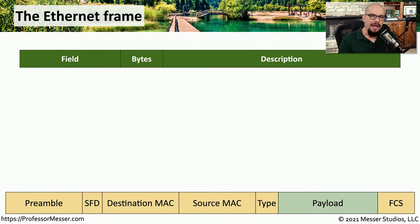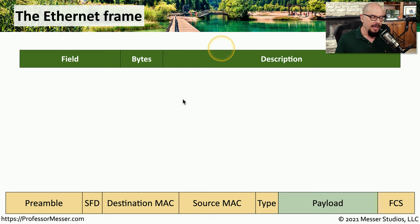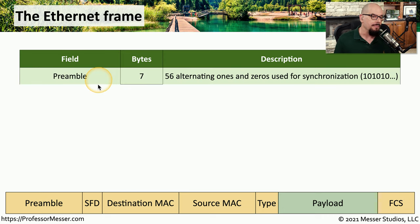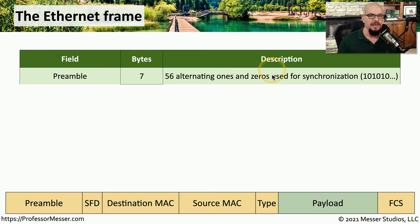To understand more about how traffic gets from one side of the network to the other, it'd be useful to examine what's inside of an ethernet frame. I have a representation of an ethernet frame here at the bottom, and let's step through each one of the fields that you would find in this frame. Let's start with the preamble. The preamble is seven bytes long, and it's a series of 56 alternating ones and zeros. This preamble is a notification to a device that everything after the preamble is going to be an ethernet frame.